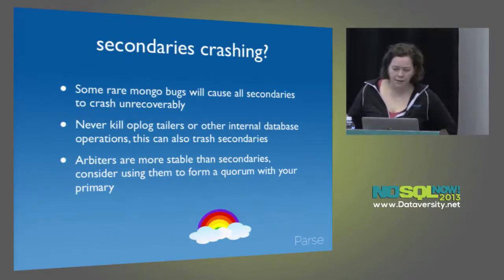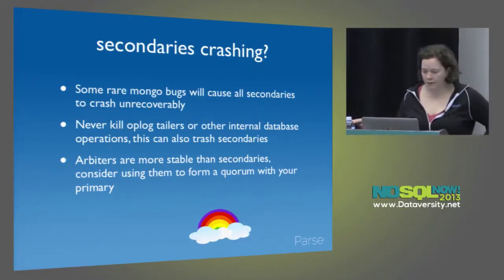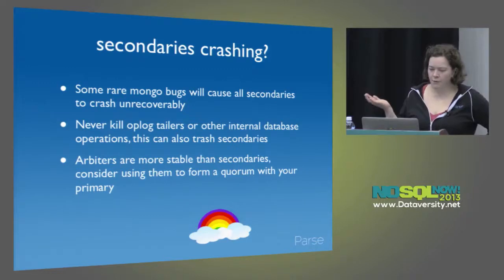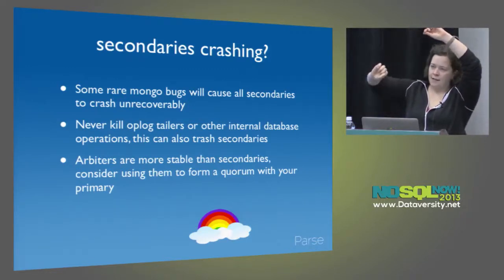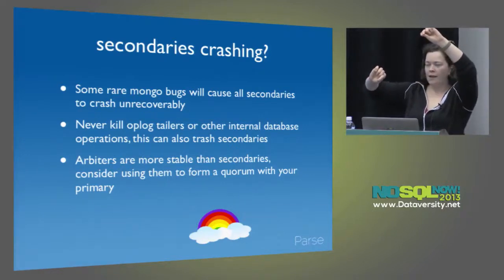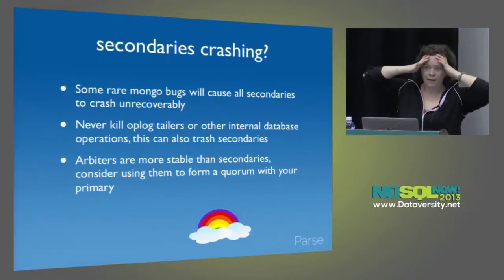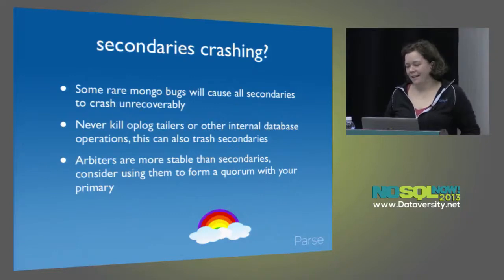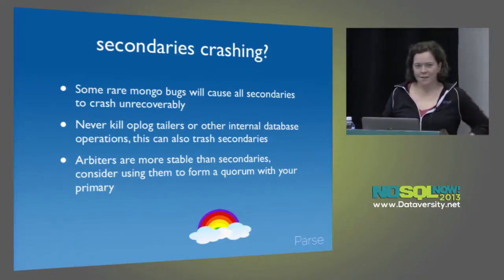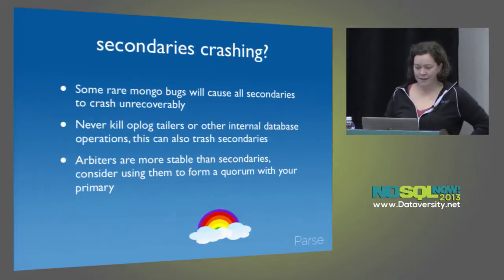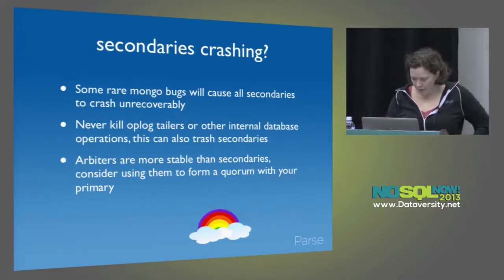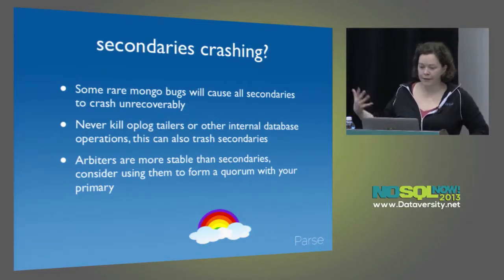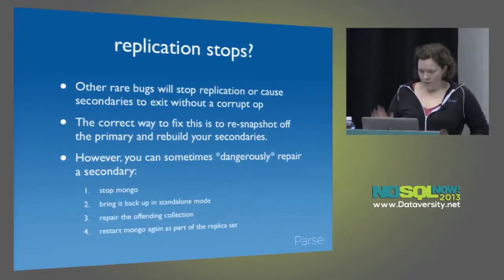There are some Mongo bugs that will cause secondaries to crash. Be very careful that you're not killing op-log tailers or any internal database operations. There are some bugs where an invalid op can make its way into the op-log even though it didn't get run on the primary. There is currently no way to skip an op in the op-log — this is my number one most requested feature. You can do it in MySQL, and it would be really nice to just say 'I know that op is bad, please skip it.' The only way to fix an op-log bug is to re-snapshot off the primary and rebuild all your secondaries, which will take your site down.